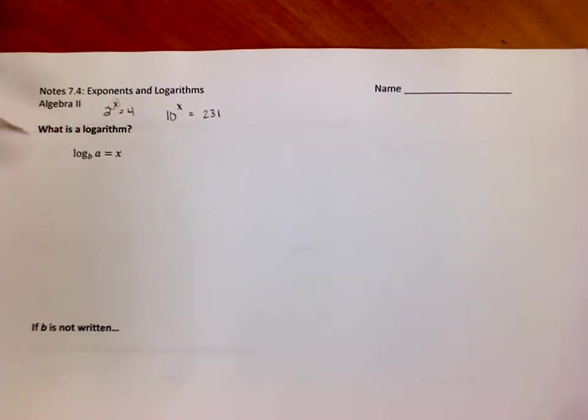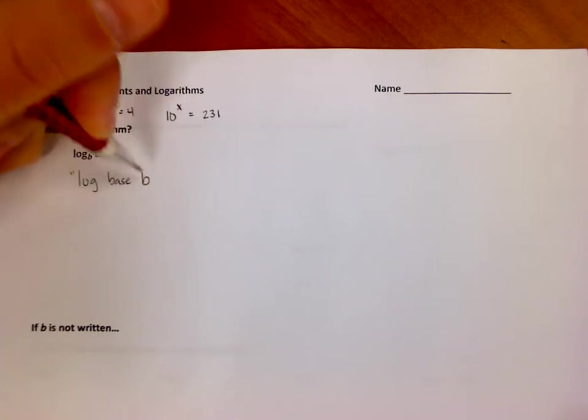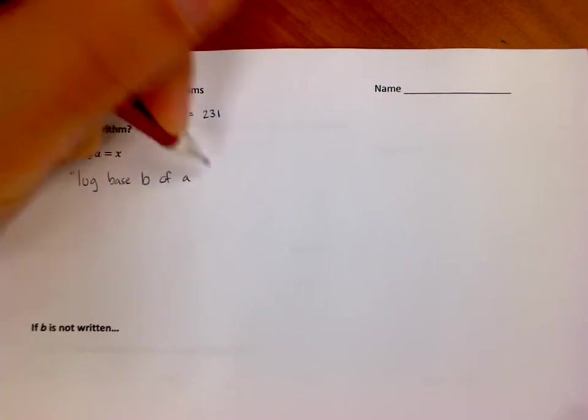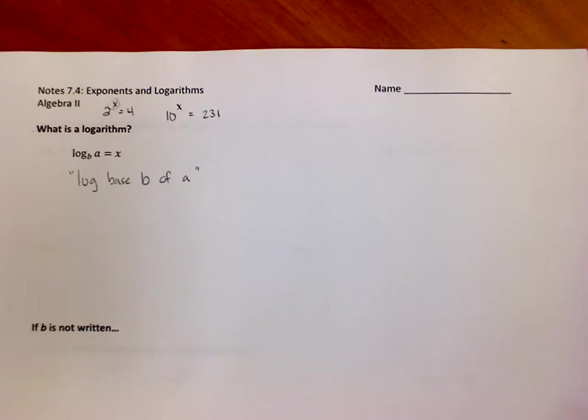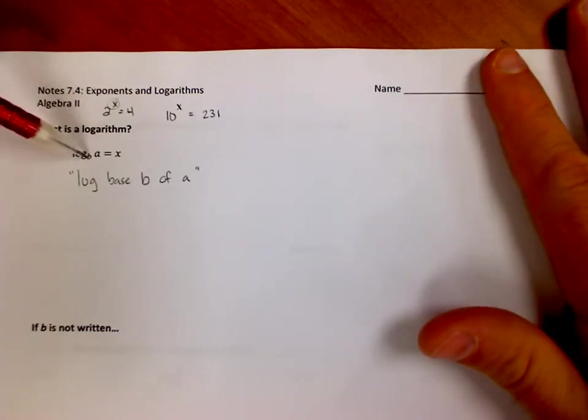In order to solve for it when it's not an easy problem, we need what's called a logarithm. The formula you're going to see is log base b of a. That's how you state this log base b of a. b and a of course will be numbers, it'll be log base like 10 of 13 or something.